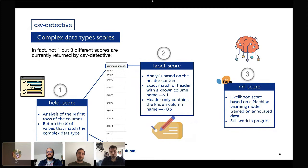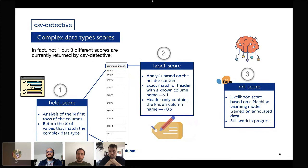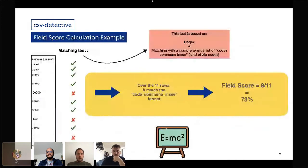The last score is a machine learning score. We designed a machine learning model, thanks to annotated data, to automatically detect what complex type is in CSV file columns. At the moment, we mostly rely on the first two scores because the ML score is still a work in progress — we need to improve it before actually using it. Sometimes we also combine the scores to get better results in the end.